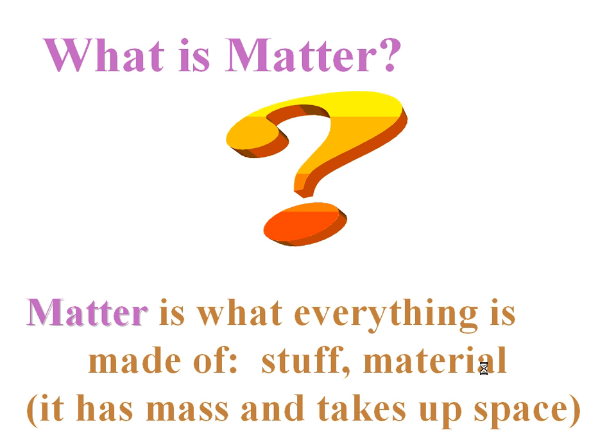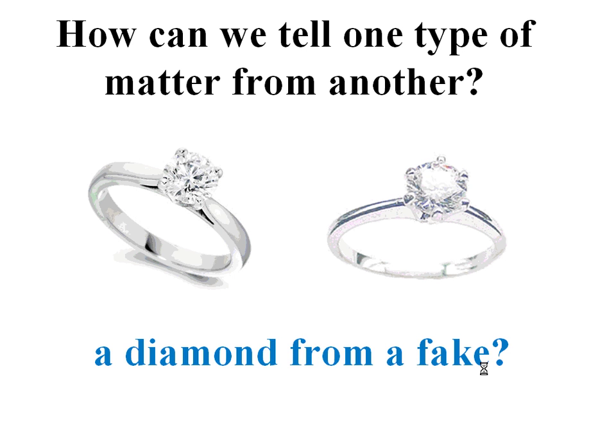Matter is everything that's out there. It's basically the stuff, the material, whatever has mass and takes up space is matter. Now, matter can be very similar. Sometimes it's very difficult to tell what one thing is versus another. For example, with the two rings you see here, just by looking at them, it's not possible to tell is this one real or is it fake? Is it a diamond or is it cubic zirconia?